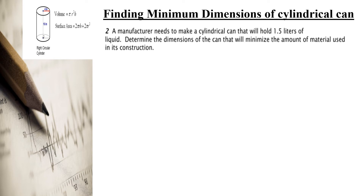The goal is to find the minimum dimensions of a cylindrical can. If a manufacturer needs to make a cylindrical can that will hold 1.5 liters of liquid, determine the dimensions of the can that will minimize the amount of material used in its construction.